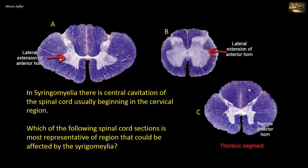Second, remember that the absolute amount of nerve fibers in the white matter increases as we go higher in the spinal cord. So in the cervical region, there is a larger white to gray ratio, and this is seen in A. The reason is that in higher segments of the spinal cord, the descending fibers are not yet consumed, and the ascending fibers have reached their maximum, being added to as they ascend the spinal cord.